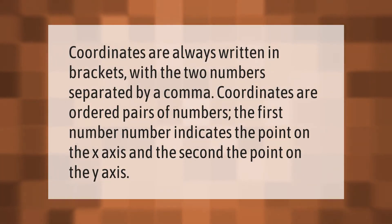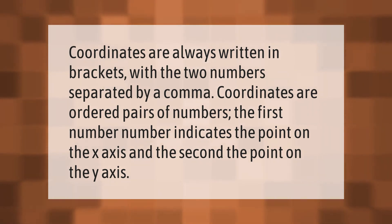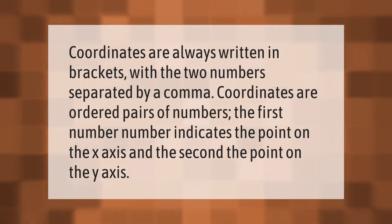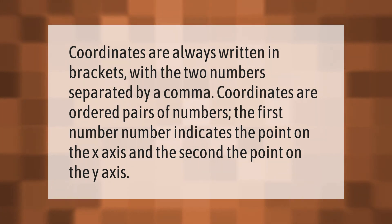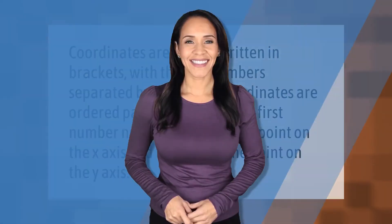Coordinates are always written in brackets with the two numbers separated by a comma. Coordinates are ordered pairs of numbers — the first number indicates the point on the x-axis and the second indicates the point on the y-axis.